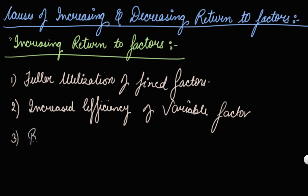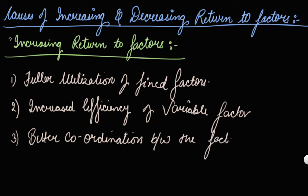The third cause is better coordination between the factors. There will be proper coordination between your fixed and variable factors. As long as fixed factors remain underutilized — your machines are not fully utilized — you can bring in more and more variable factors and labor to coordinate with your fixed factor. So there will be better coordination between your factors, and this will help you in getting increasing returns to factors.